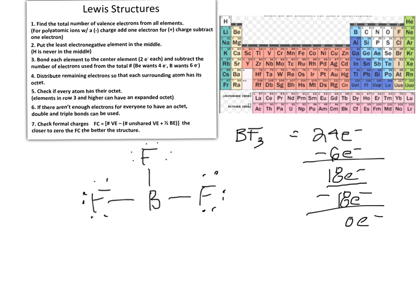Our next step is to check that each surrounding atom has its octet. Each of the fluorines is bonded the same way to boron, and each has 8 electrons — so each fluorine has its octet. However, boron only has 6 electrons. Normally this would cause us to remove some electrons and create a double bond between fluorine and boron. But we need to remember that both beryllium and boron are exceptions to the rules, so this double bonding would be inappropriate. We'll use formal charge calculations to see why.